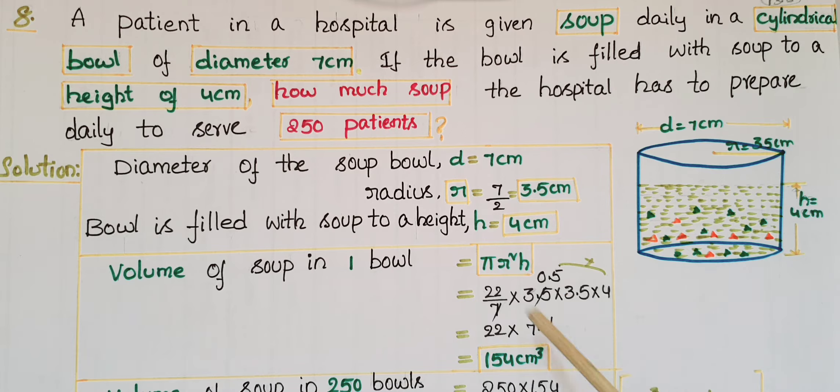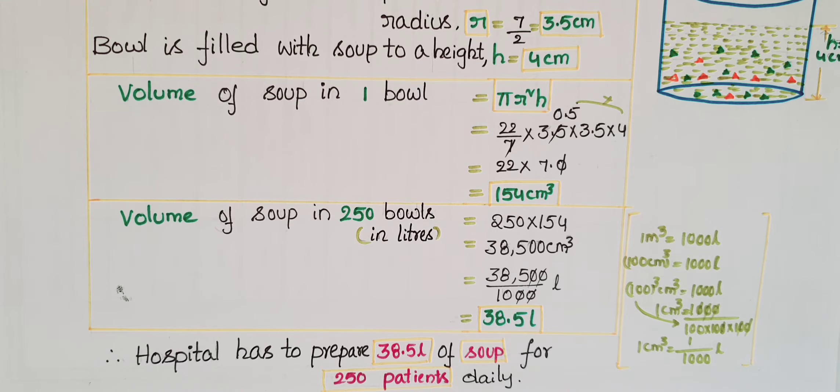This is volume of soup in one bowl. Now we have to find volume of soup in 250 bowls, that is equal to, for one bowl it is 154 centimeter cube, so for 250 bowls, 250 into 154, that is equal to 38,500 centimeter cube.